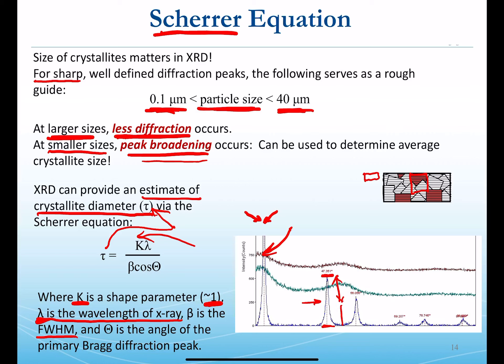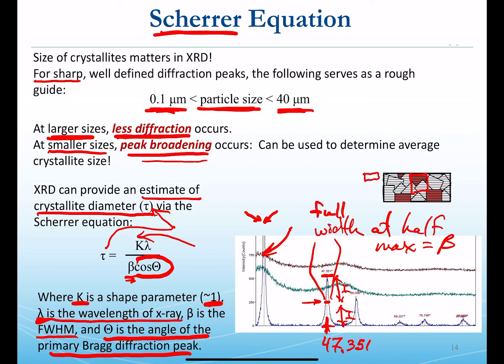We have a maximum value, and if we go to the halfway point where this intensity matches this value, we measure how wide that peak is. The width of that peak at half of its maximum is beta, the full width at half max. Then we put cosine of theta in. Theta is the angle of the primary diffraction peak. Here we have 2 theta at 47.351; we would input theta in radians into the Scherrer equation.